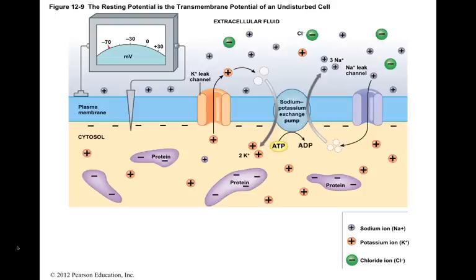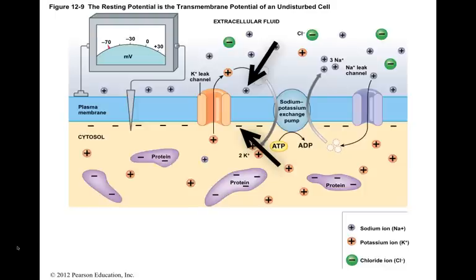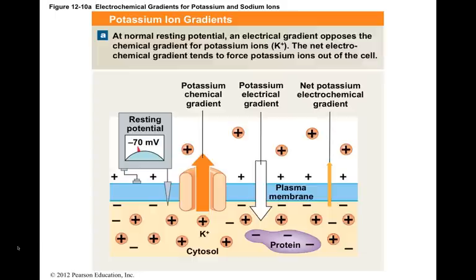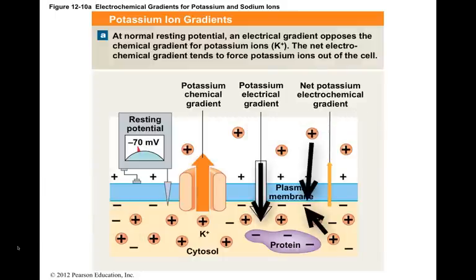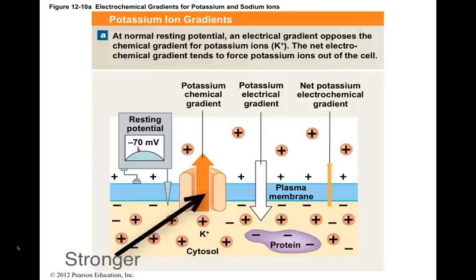At the same time, the extracellular fluid near the outer surface of the plasma membrane has a net gain of positive charges. The positive and negative charges are separated by the plasma membrane, and this causes an electrical gradient as the charges are attracted to one another. The intracellular concentration of potassium ions is high, whereas the extracellular concentration is very low. Therefore, the chemical gradient for potassium ions tends to drive them out of the cell. However, the electrical gradient opposes this movement because potassium ions inside the cell are attracted to the inside of the plasma membrane and repelled by the positive charges on the outside. The chemical gradient is strong enough to overpower the electrical gradient, but the electrical gradient weakens the force driving potassium out of the cell.